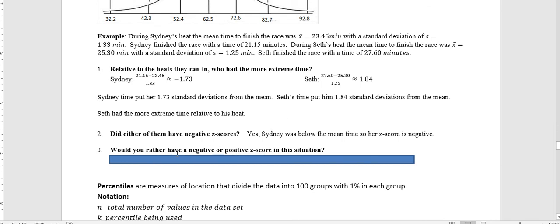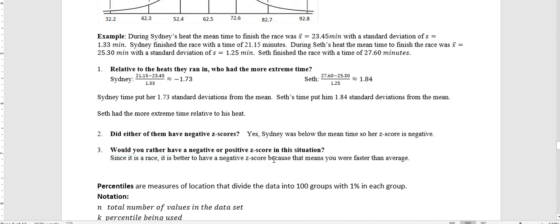Would you rather have a negative or positive z-score in this situation? It's nice when you're faster. If you're faster, then you have a lower time than the mean. So for a race, a negative z-score actually means you're faster, and that's what most people would want. So z-score being negative doesn't automatically mean it's a bad thing.